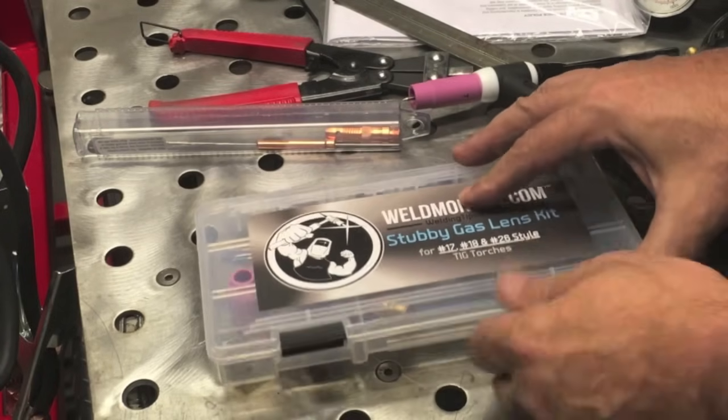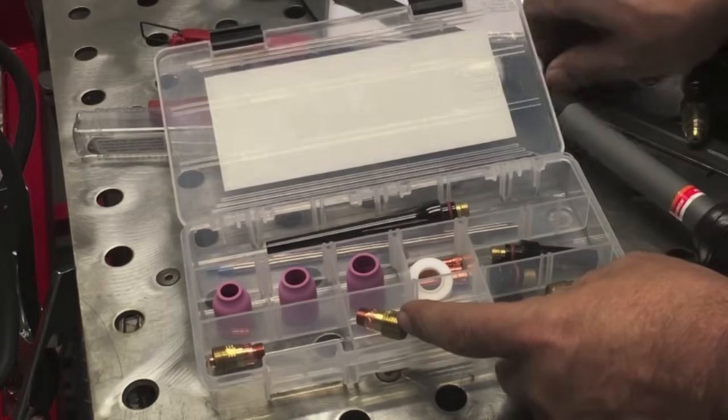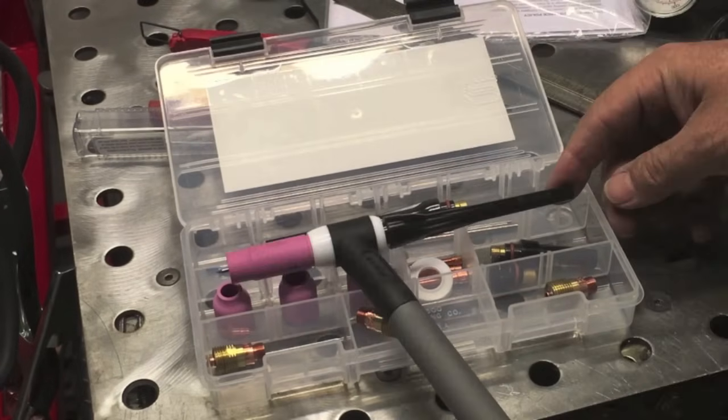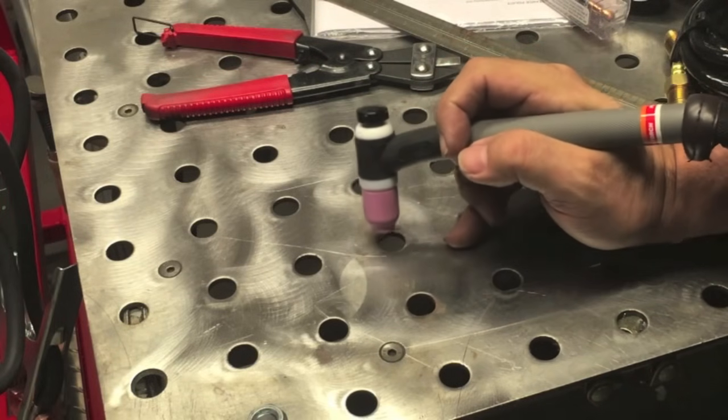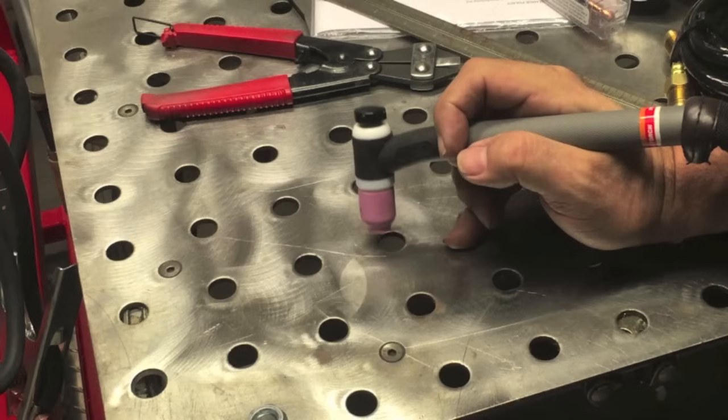I changed it out to a stubby gas lens kit so I can use the short style hardware—the short cups. So I used that number six cup for most of the aluminum along with that Pyrex cup, which takes a whole different collet body with an O-ring. But again, I'll go over that later. This just makes it—I just like this a lot better personally. I just wanted to show you, it's something I put on there to upgrade the torch, not something that comes with it.